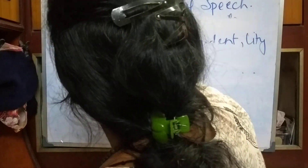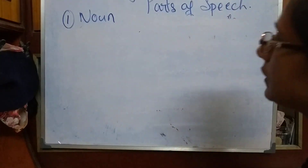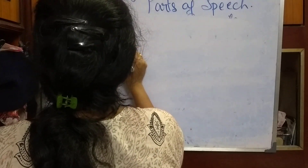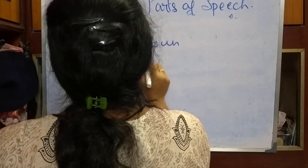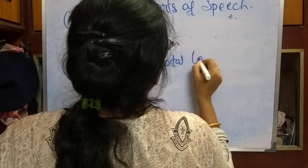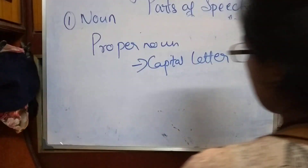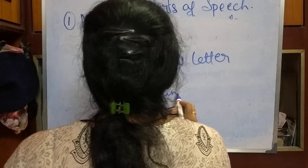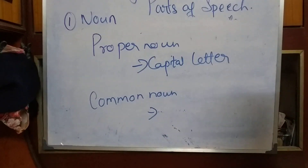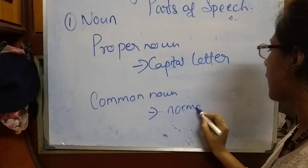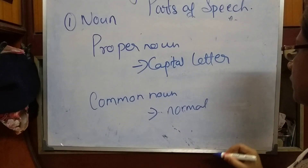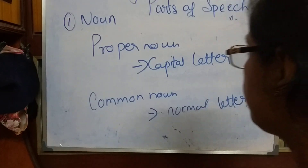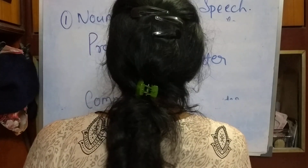Common noun, when we write it, we will keep it in small letters. Proper noun always starts with a capital letter. If a common noun is at the starting of a sentence, we will keep it in capital letters; otherwise, small letters. Proper noun is the name of a specific person, place, or thing. Common noun is the general name.